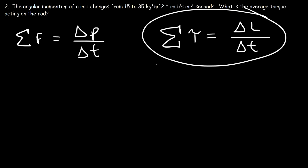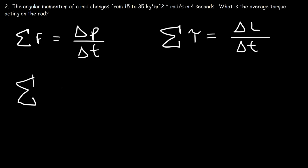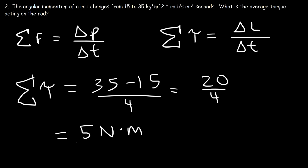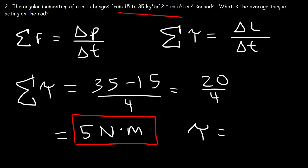Now let's calculate the average net torque. It's equal to the change in angular momentum, which is 35 minus 15, divided by the change in time. The change in angular momentum is 20, and dividing by 4 gives us the average net torque of 5 newtons times meters. Because the angular momentum is increasing, the net torque is positive. If L was decreasing, the net torque would be negative.